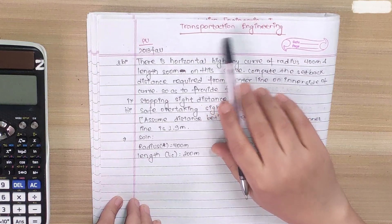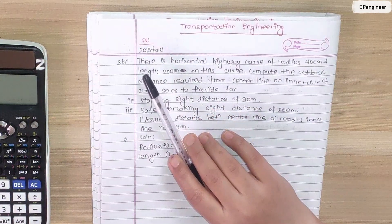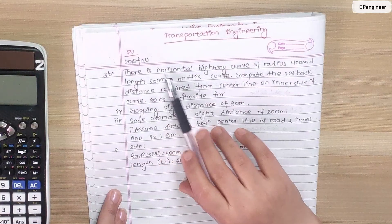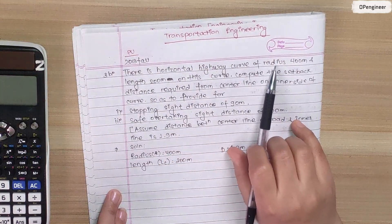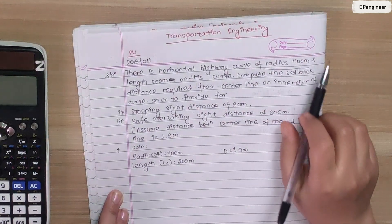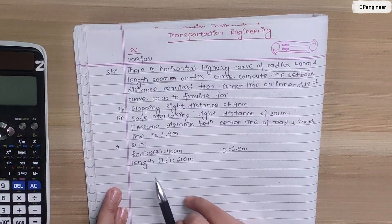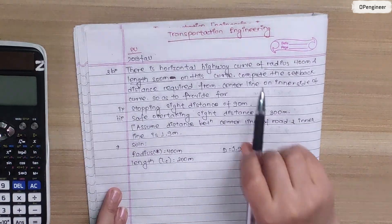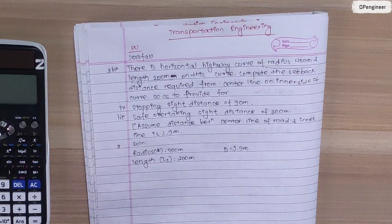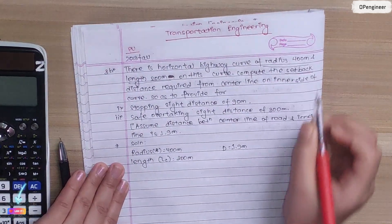Welcome to Transportation Engineering, Pukhara University, 2013 Fall 3B. There is a horizontal highway curve of radius 400m and length 200m. Compute the setback distance required from the center line on the inner side of the curve.